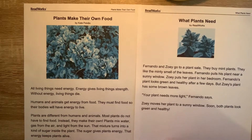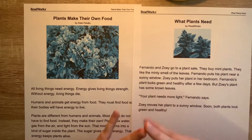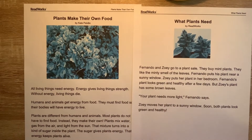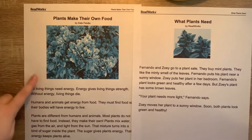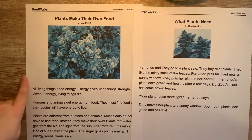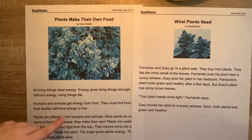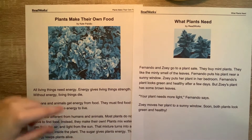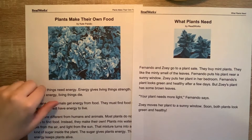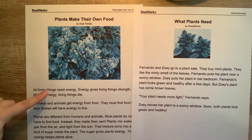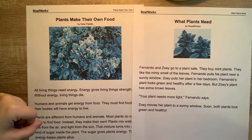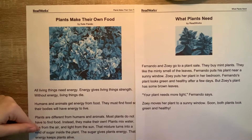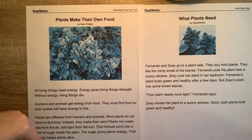So now we are going to take a look at the differences between the two texts. The first text was an informational text. It is important that we notice how the story did not have any characters, talking between characters, a problem or solution, or plot. However, it taught us about plants. We now know that plants make their own food by using water, gas from the air, and sunlight. Because it taught us all these things, we know that it is an informational text.